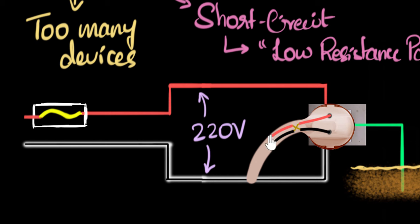Now again, the current, instead of flowing all the way through the device, the current will just flow from here to here. Again, a short circuit. And again, that's bad because too much current, too much heat, it can damage this device.